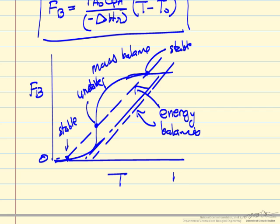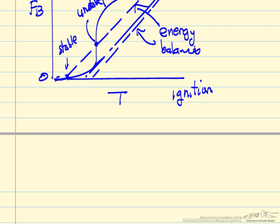So that would be what's referred to as igniting the reactor, ignition. Very small change in feed temperature causes a very large change in reactor temperature. And then, of course, the question is, how do we know which one of these points we're operating at?